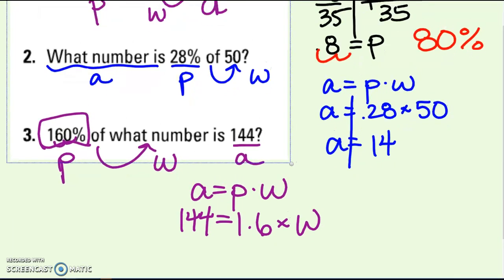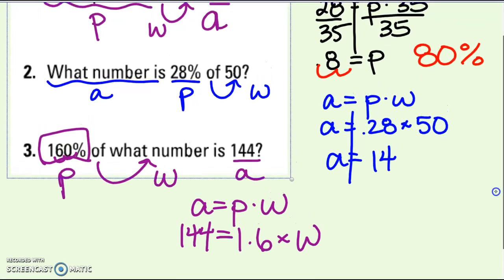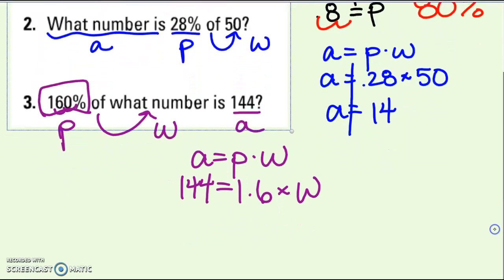Let's move that down. Get W by itself. Divide by 1.6 on both sides, and I get 90. That's a quick example, one of each.